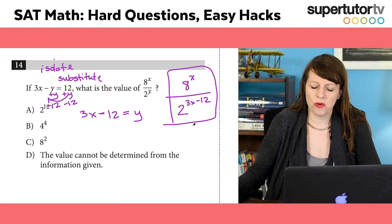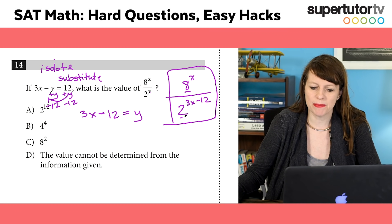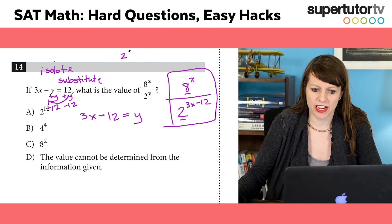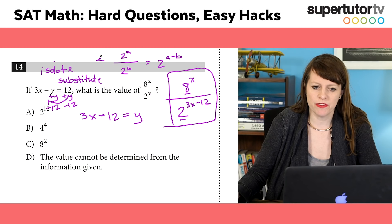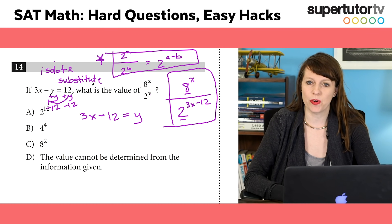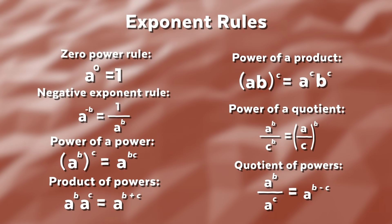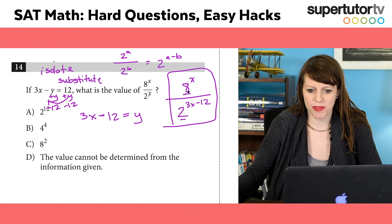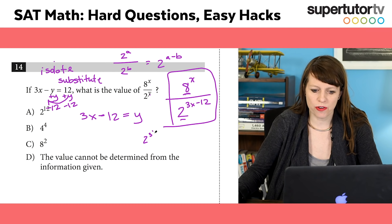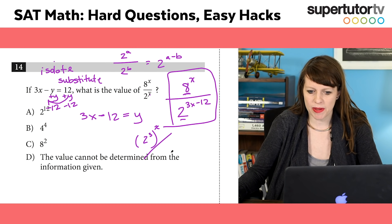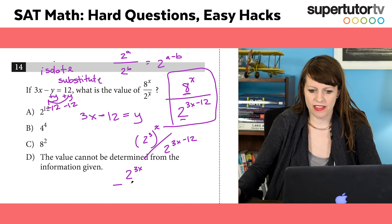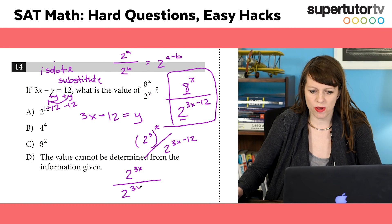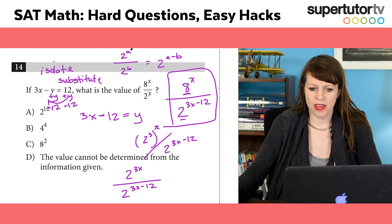So I get 8 to the x over 2 to the 3x minus 12. Now here, this is cool because if I can just get these bases to match, then I can use this exponents rule: 2 to the a over 2 to the b equals 2 to the a minus b. If you don't remember this, it's a really good idea to review your exponents. I'm going to put this in terms of 2. That's 2 to the third quantity to the x on the top, and that's over 2 to the 3x minus 12. This simplifies to 2 to the 3x over 2 to the 3x minus 12.